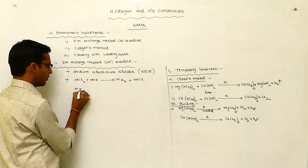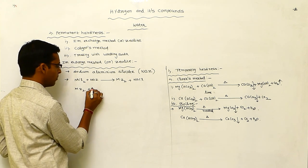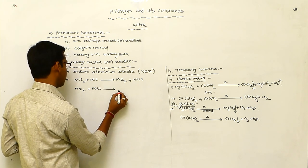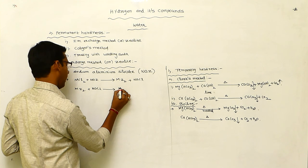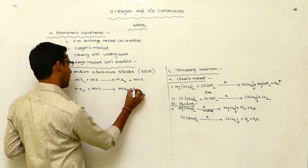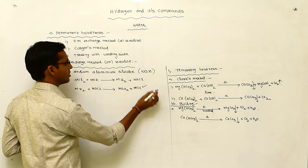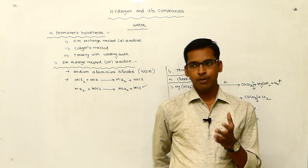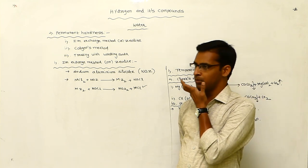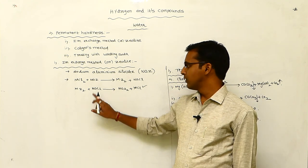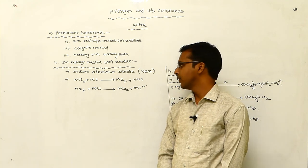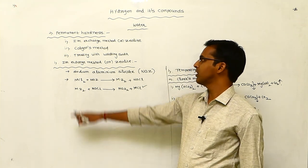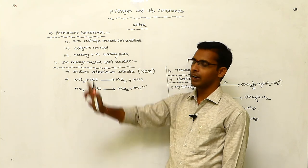The MZ₂ product is then reacted further with sodium chloride, and is converted back to NAZ plus MCl. This means any salts present in your water can be removed and purified by substitution with sodium chloride. So the ion exchange method is a suitable method for removing permanent hardness of water.